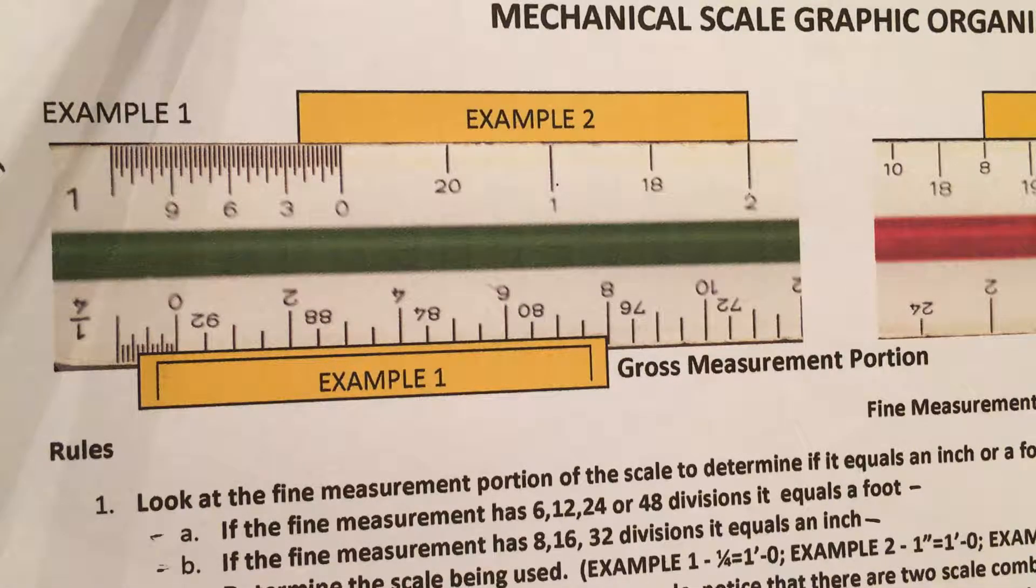With a normal ruler, you read lines left to right, starting from zero and then reading whatever measurement comes all the way, whether it be eight and a half or eight and a quarter or something like that.